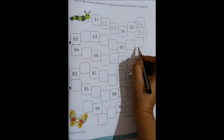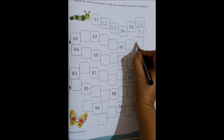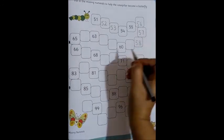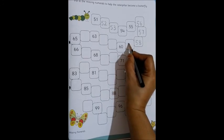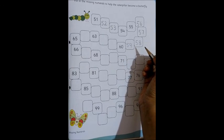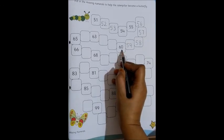Then what are we going to write? 58. Then 59. 60 is already there. So which one will we write? 61.